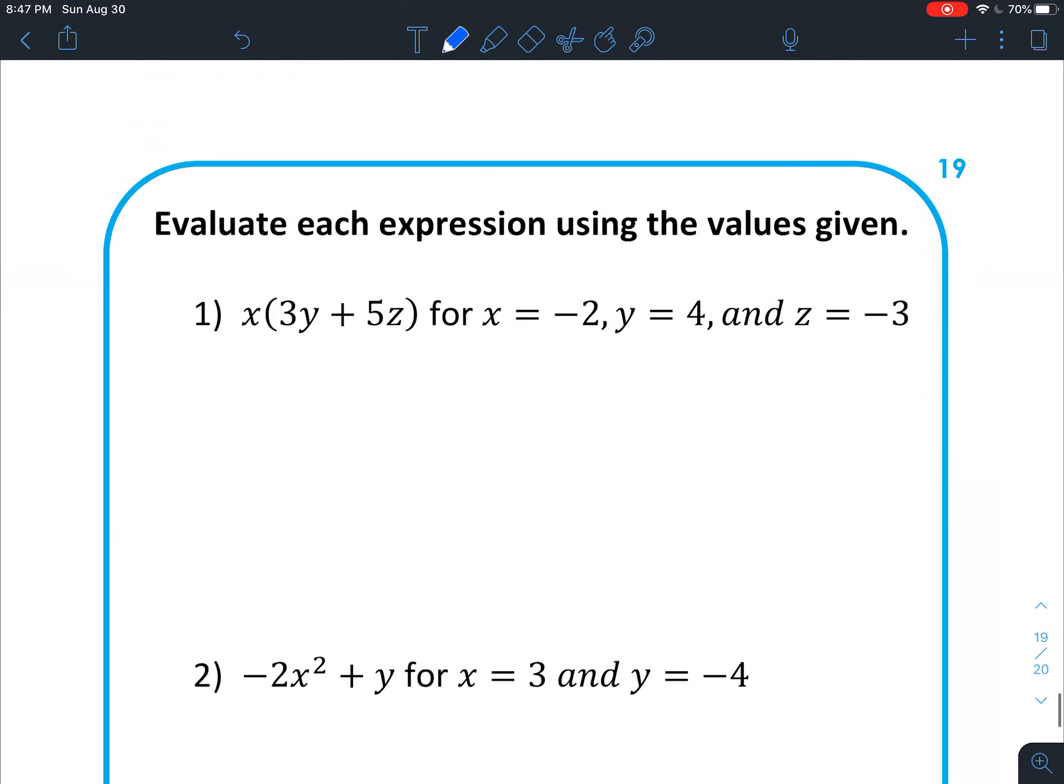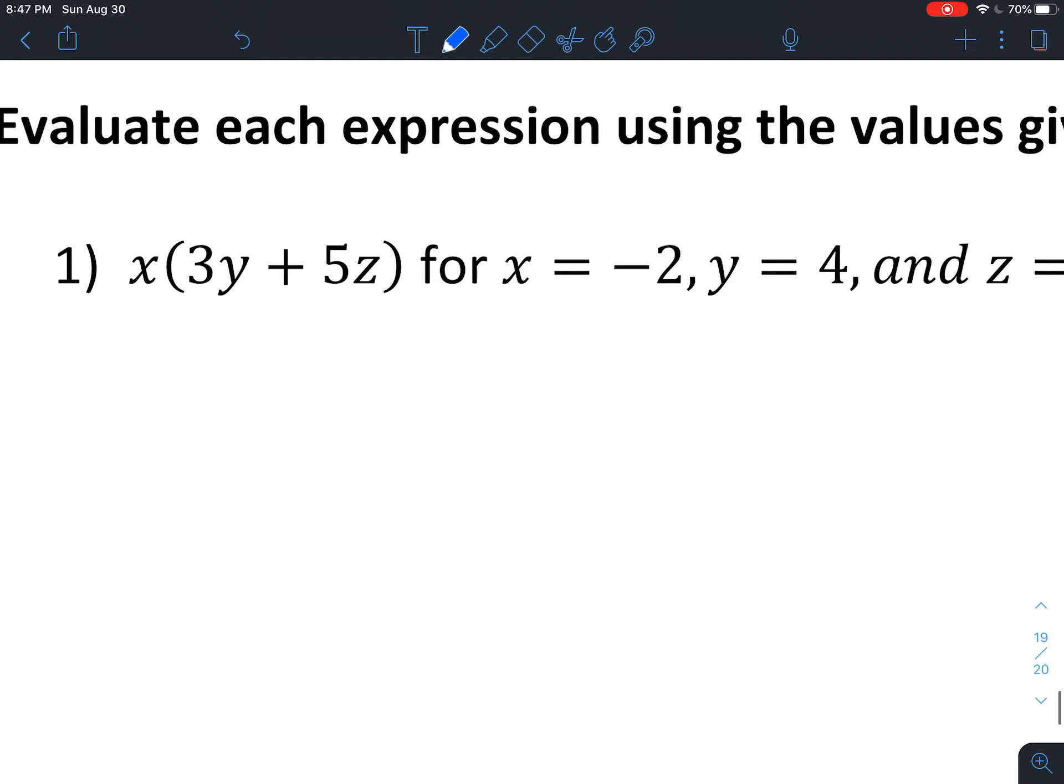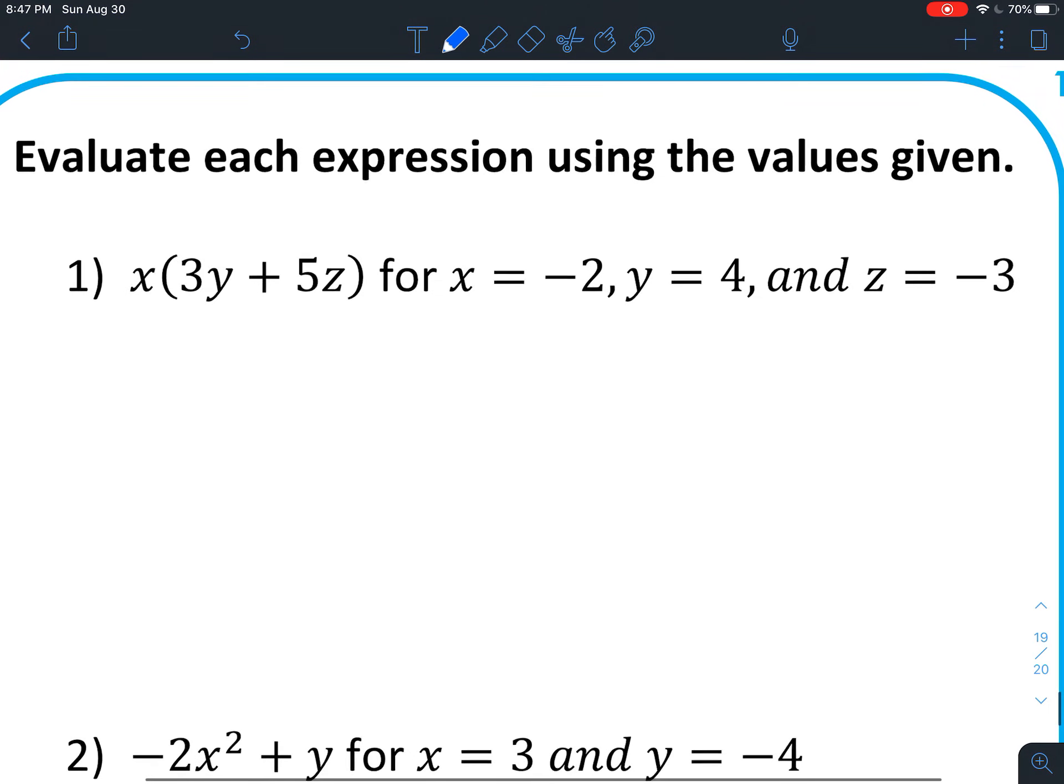Let's do a couple of examples. So you might say, whoa, that looks pretty complicated. However, first step, replace the variables with numbers. So find a variable x, match it up with the one you have over here. Let's just circle the number itself. So we're going to put a negative 2 where the x used to be.